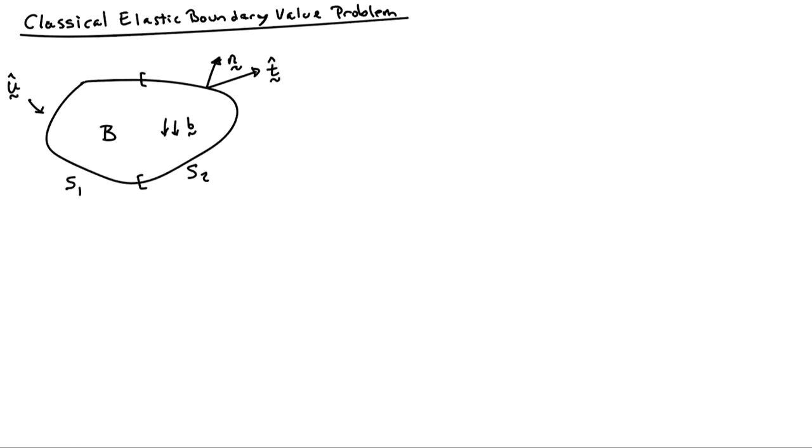So the basic setup is you have some kind of elastic body. It's subjected to a body force, say little b. It's subjected to surface tractions t hat over part of the external boundary we'll call s2, and it's subjected to displacement boundary conditions u hat on part of the external boundary we'll call s1.